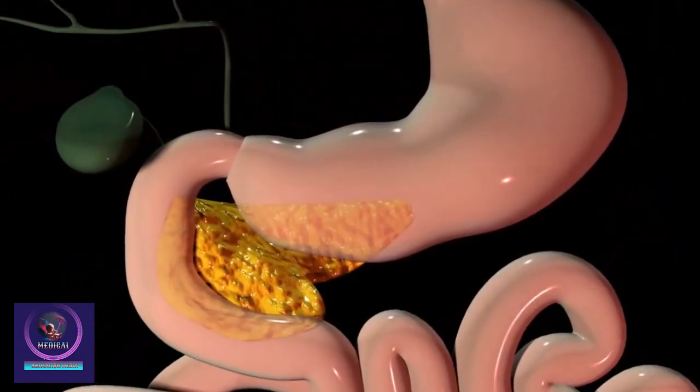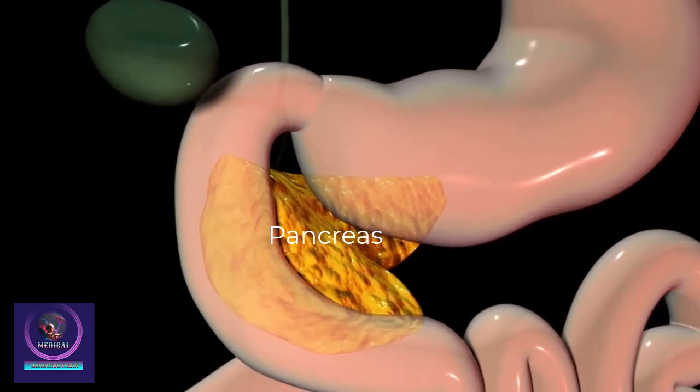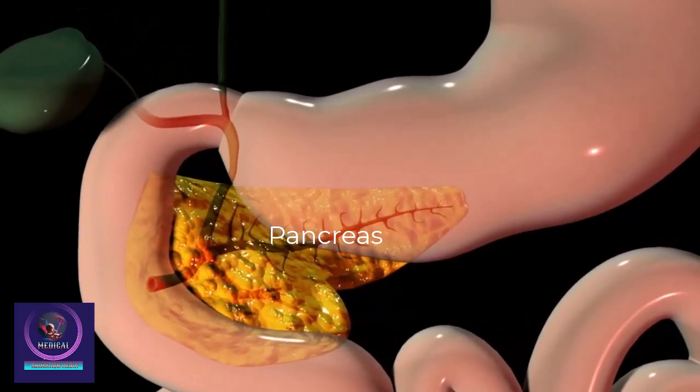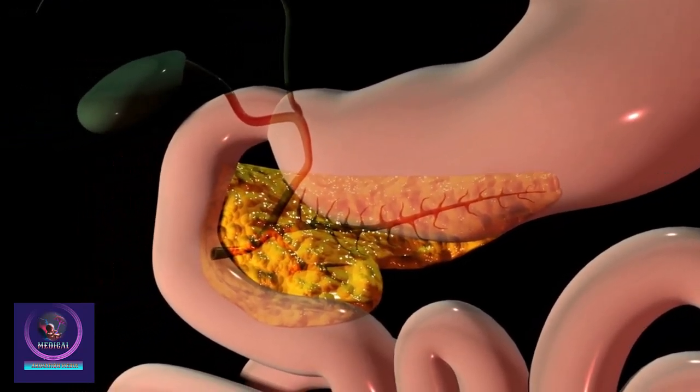The pancreas is a dual-purpose gland with both digestive and endocrine functions. The human pancreas is an organ located behind the stomach. The pancreas has two main jobs in your body.